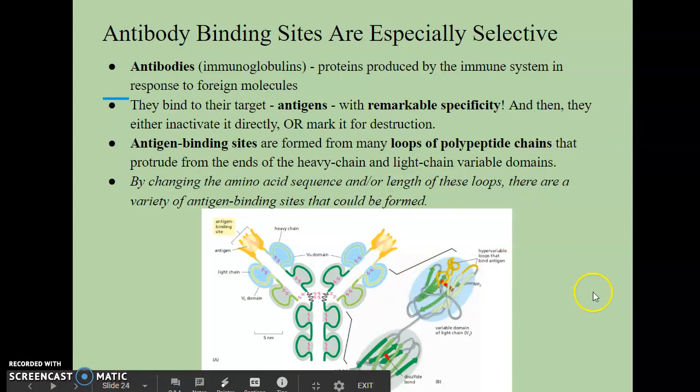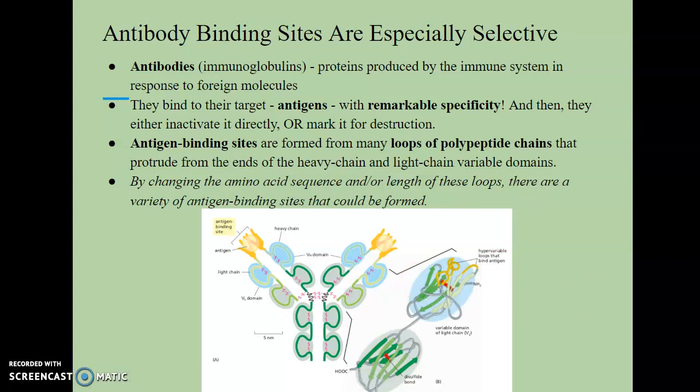So an example of this is an antibody. So an antibody is a type of protein. We often call it an immunoglobulin. But it is a type of protein that is produced by our own immune system in response to a foreign molecule, such as a virus or a bacteria.